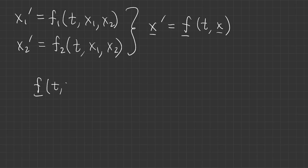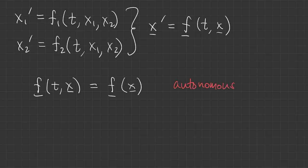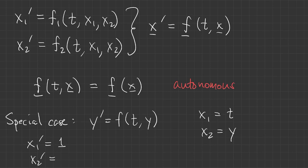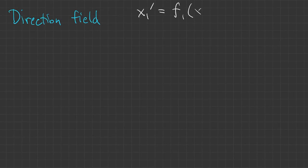If this function of T and X doesn't actually depend on T, we call the system autonomous, just like we did in the scalar case. There is one interesting special case: if we have a non-autonomous scalar problem, we can define new variables. Just as we saw for the order of the equation, non-autonomy can also be traded in for an increased dimension.